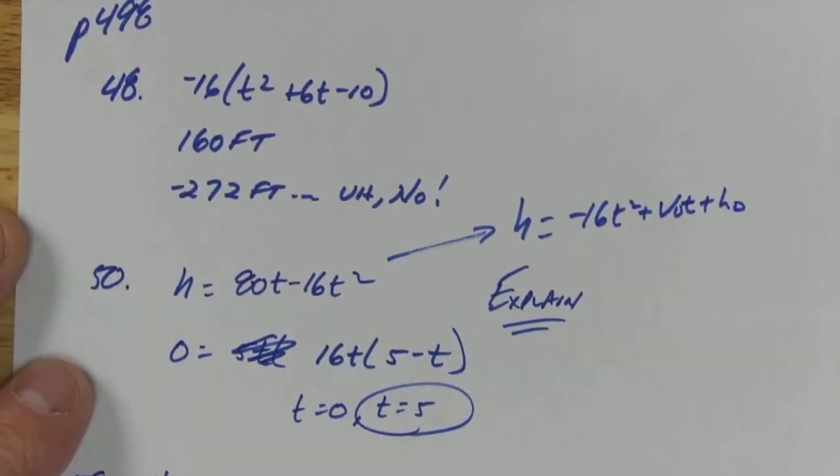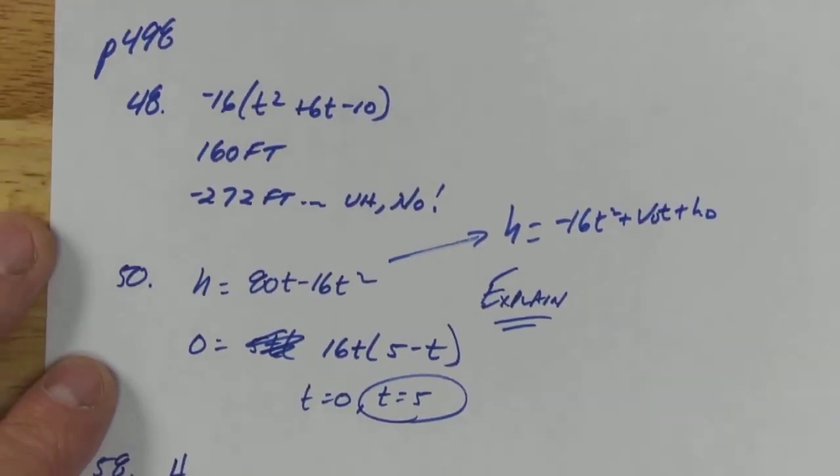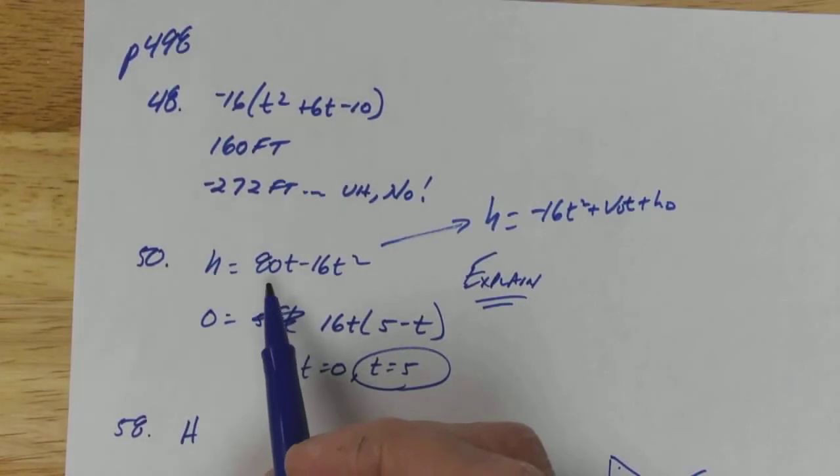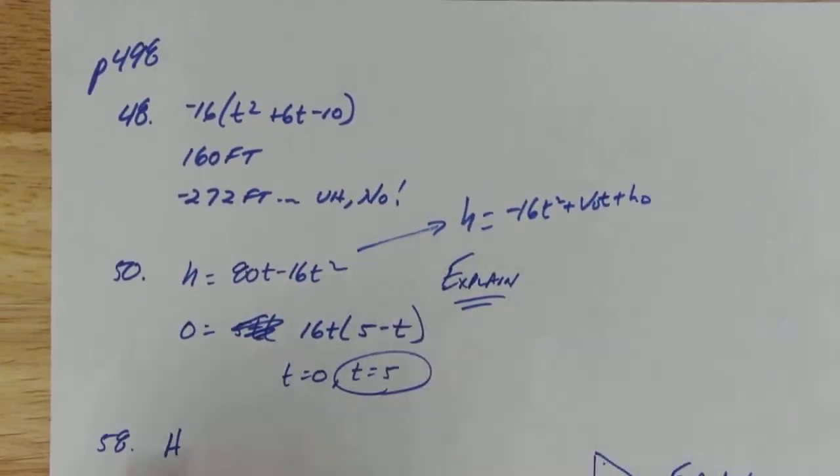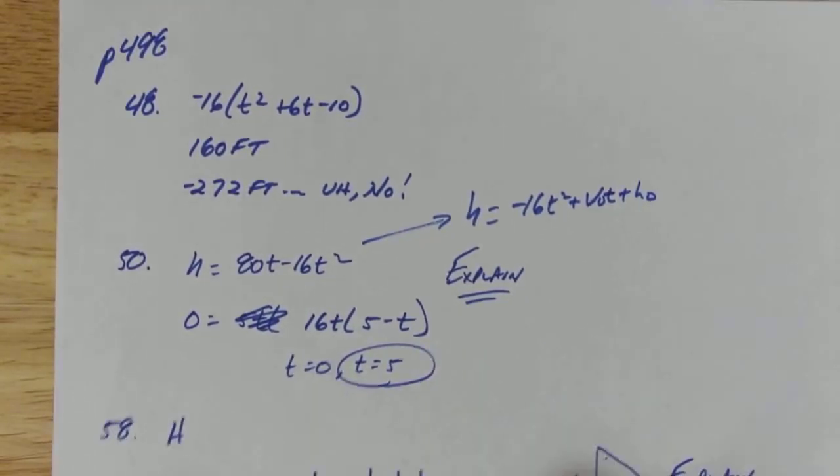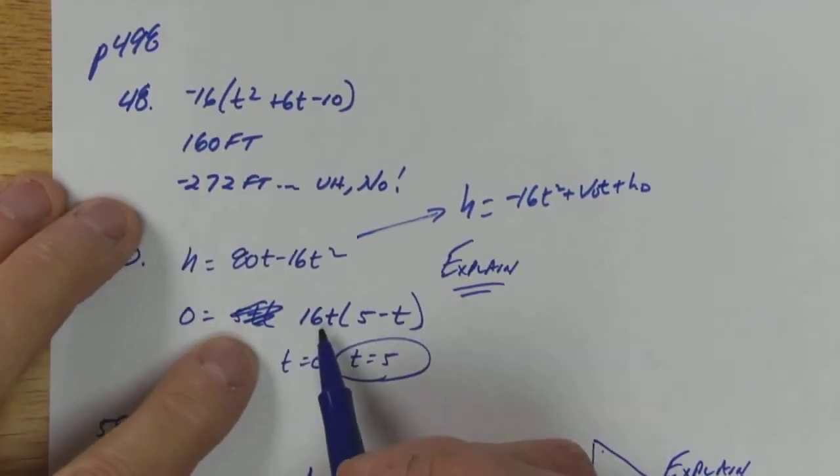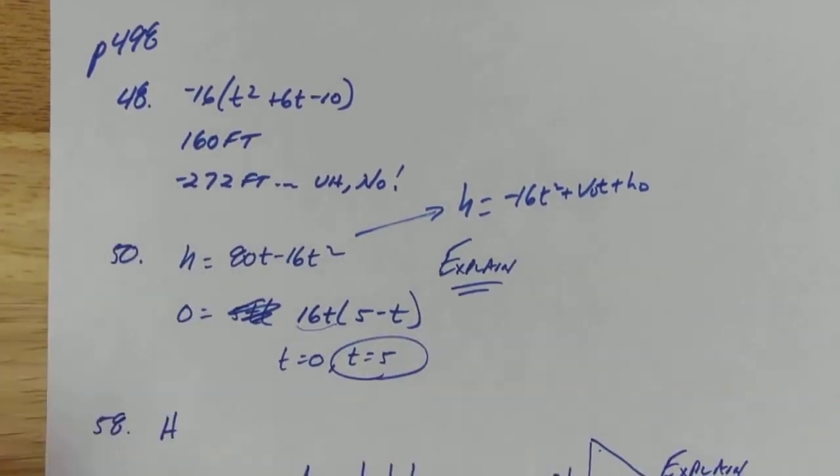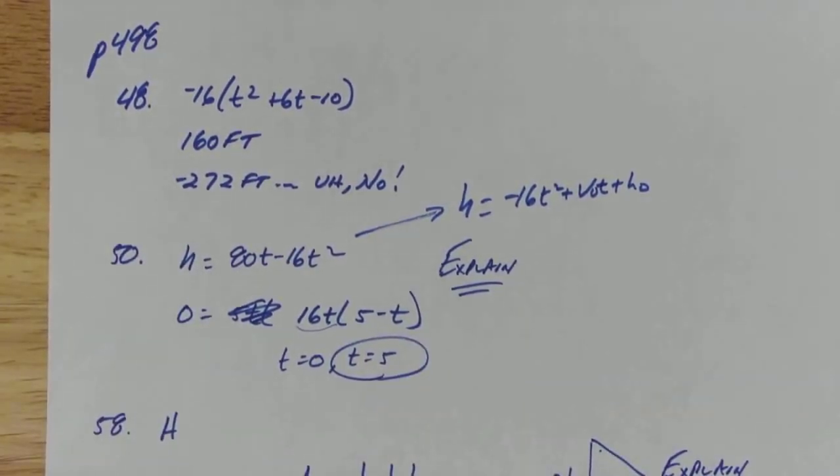It's just in a different order. They wrote the velocity portion first, so this tells me it's launching at 80 feet per second and from the ground. Either way, take out a 16t. I can put zero in there to make that part zero. To make this part zero it's going to be five, so it's going to hit the ground in five seconds.